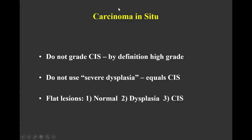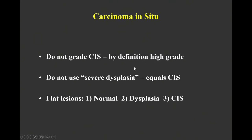We're going to jump over to carcinoma in situ and come back to dysplasia afterwards. You don't grade CIS — by definition, they're all high-grade, even though there is a spectrum from those that are more difficult to diagnose to those that are overtly CIS. Never in the bladder, or anywhere in the urothelial tract, use the term severe urothelial dysplasia. It basically equals CIS, but if a clinician sees the term severe dysplasia, they may not treat it as CIS and will undertreat the patient.